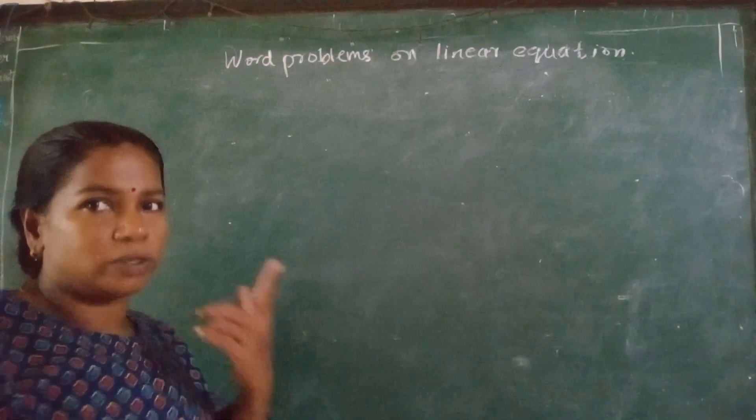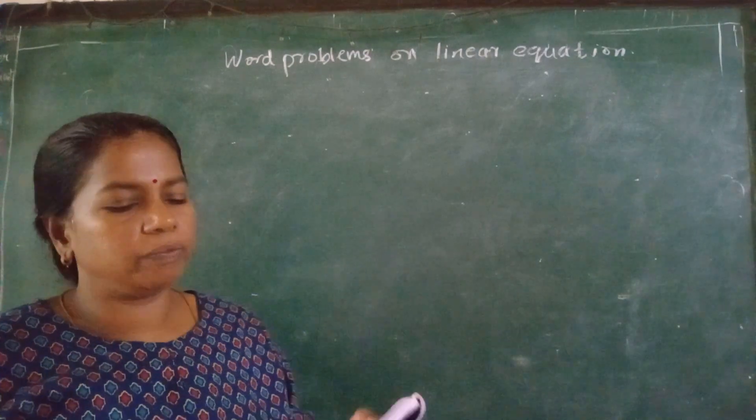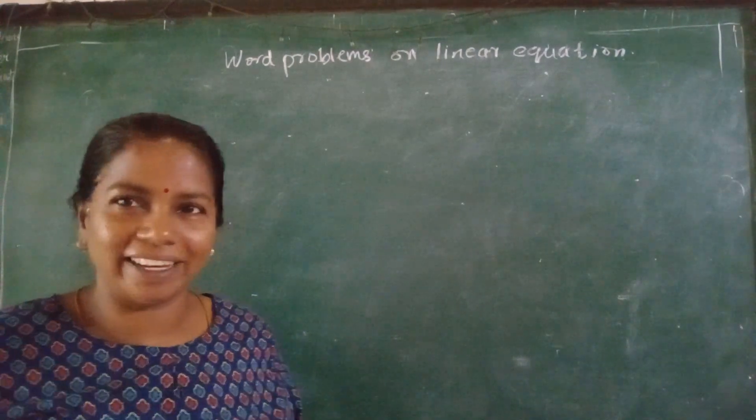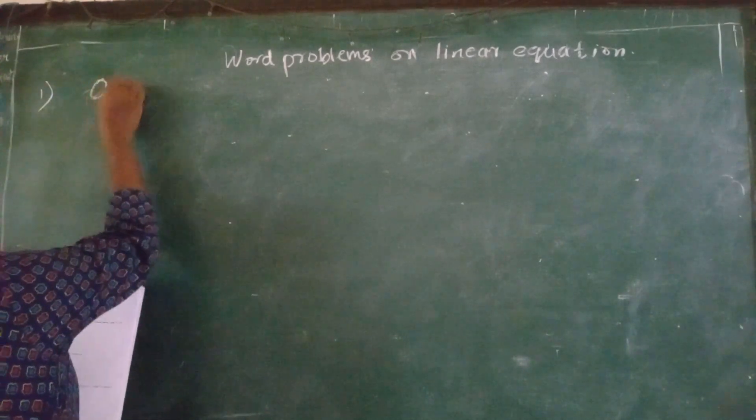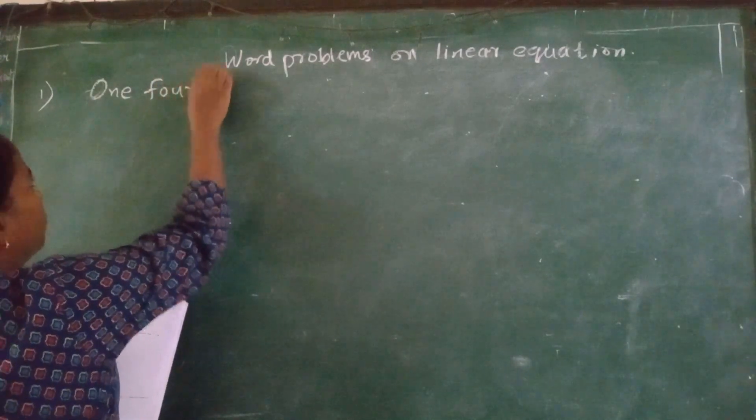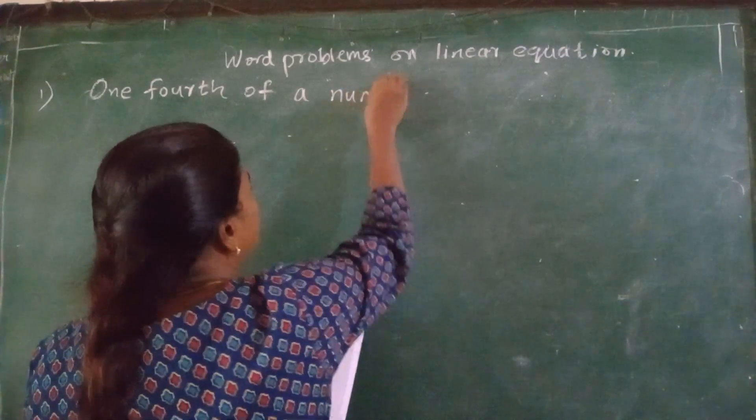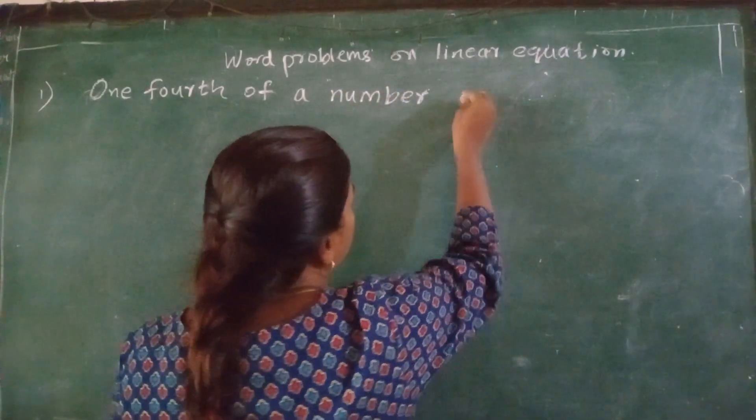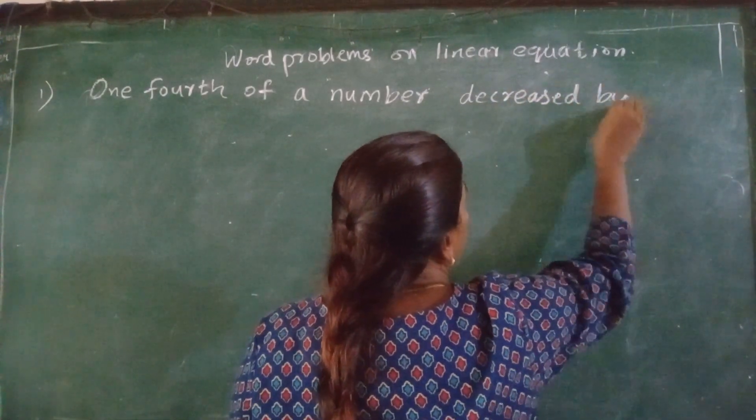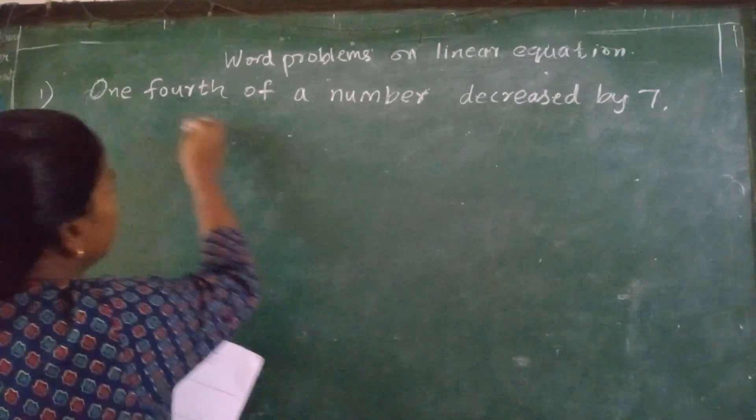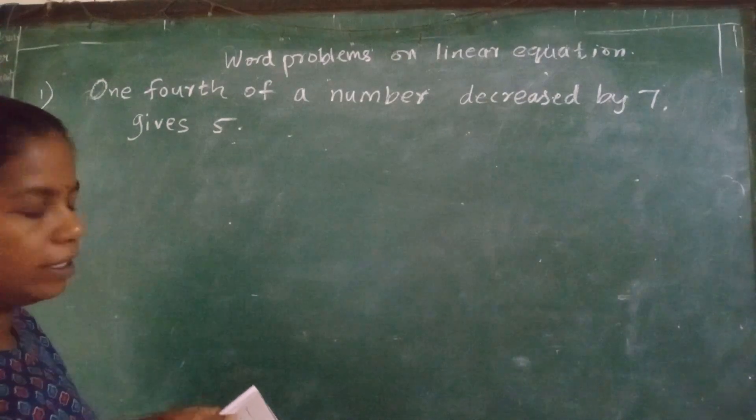Now the first question, I will just dictate. One-fourth of a number decreased by 7 gives 5. Find the number. Let me write. I will write for you. One-fourth of a number decreased by 7 gives 5. Find the number.